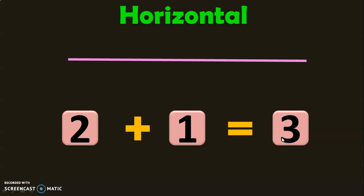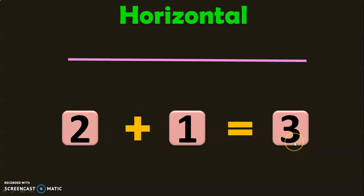First, let us understand that horizontal addition means adding in a straight line. The numbers will be written in a straight line and the addition will be done.